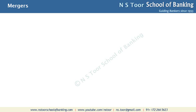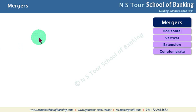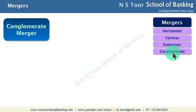Hello friends, we are continuing our discussion with mergers. As we have already seen, there can be different types of mergers — horizontal merger, vertical merger, extension merger, conglomerate merger. In this lesson we will focus on conglomerate merger.